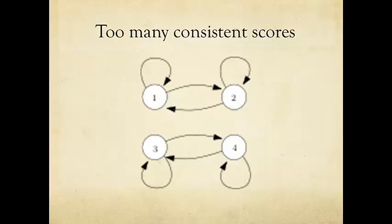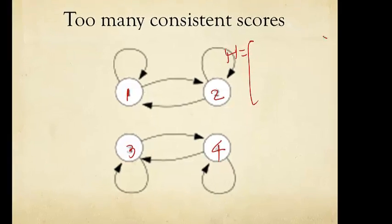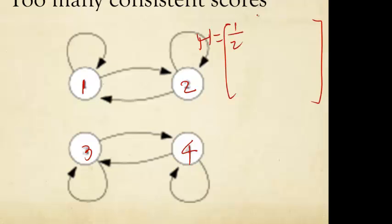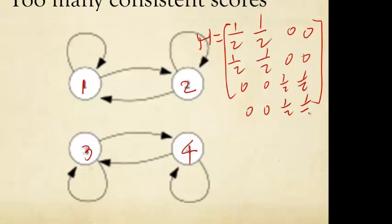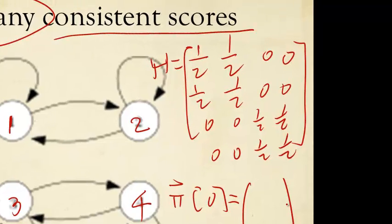But we're not done yet. There's still another problem. For example, in this simple graph with four web pages represented as four nodes and some links, we can write down the H matrix. It's again four by four, and you should be getting better and better at this already. The H matrix simply looks like this. And you can easily see that depending on what is my initial pi vector, I will end up with different importance score vectors. In other words, there are too many — more than one — consistent importance score vectors.